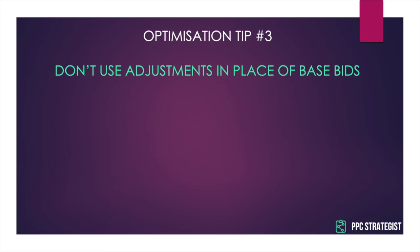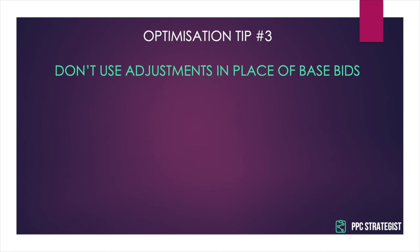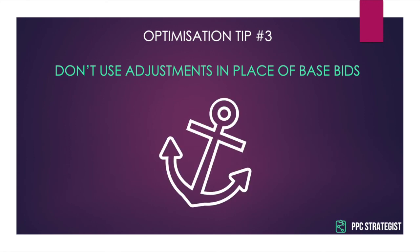Tip number three: don't use bid adjustments as a substitute for appropriate base bids. If you end up with varying degrees of positive bid adjustments, the chances are that what you really need to do is raise your base bid. Look at the base bids — keyword level or ad group level bids — first, and try to treat the adjustments as just deviations from a bid that's generally in the right zone on its own. Bid management will be a lot cleaner that way. Adjustments do often end up getting overused, and then it's hard to make meaningful adjustments because there are too many disparate levers pulling in various directions. So keep treating the base bids as your anchor.